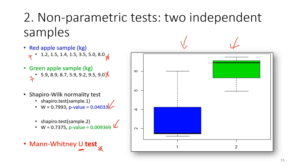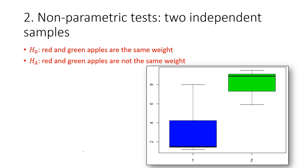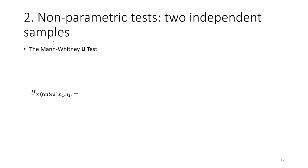As usual, the first step in statistical testing is to define the hypothesis. The statistical hypothesis for a non-parametric test is slightly different from the parametric test. For the Mann-Whitney U test, we write a statement: the null hypothesis is that the red and green apples are the same weight, and the alternative hypothesis is the opposite — the red and green apples are not the same weight. You will not see parameter symbols because this is a non-parametric test.